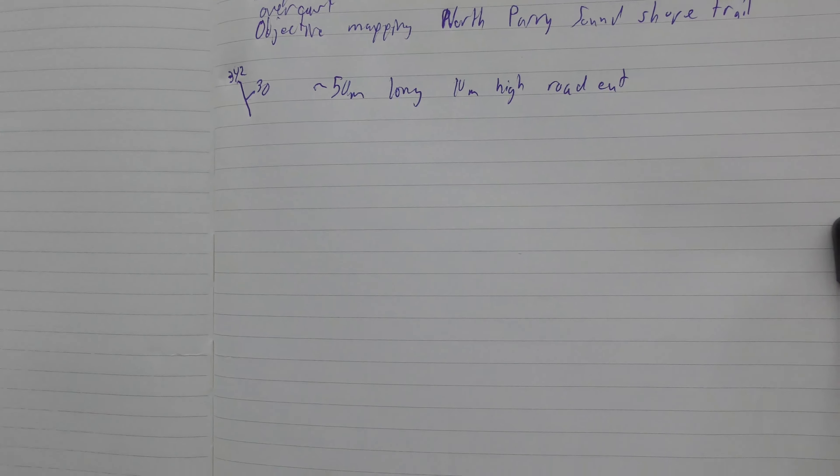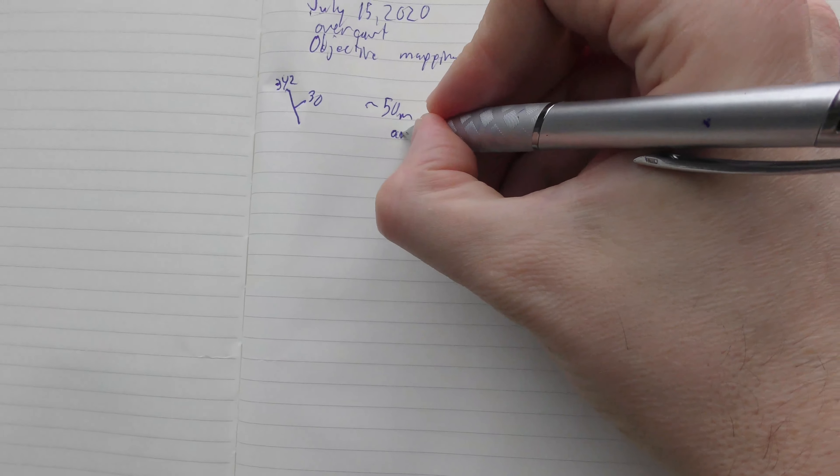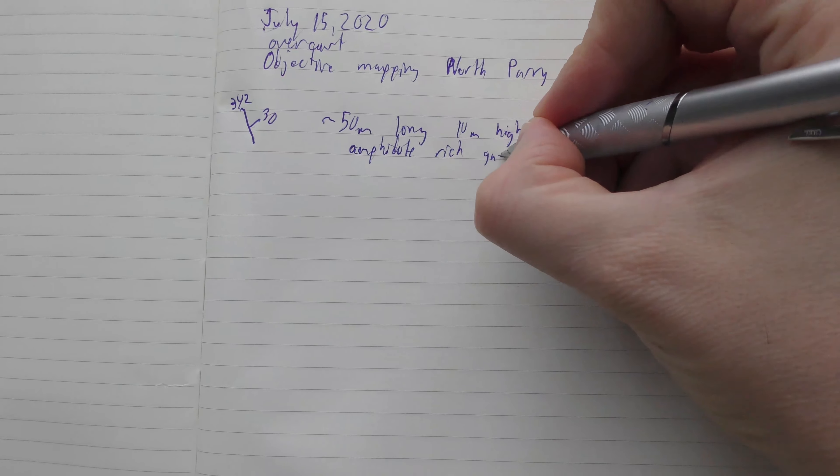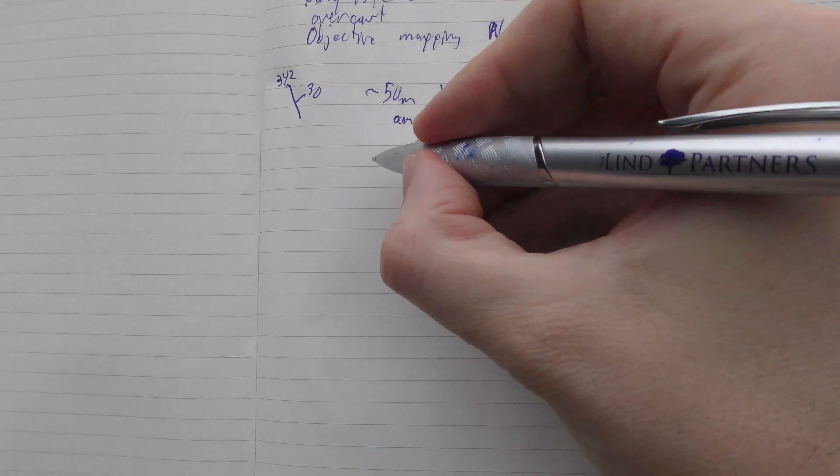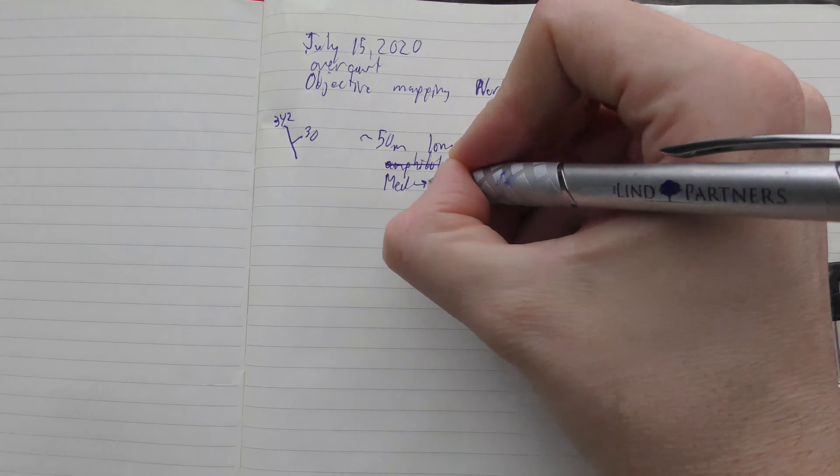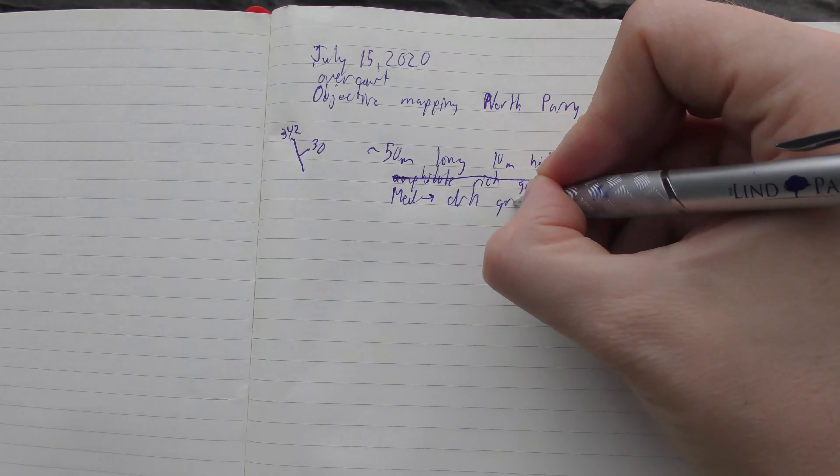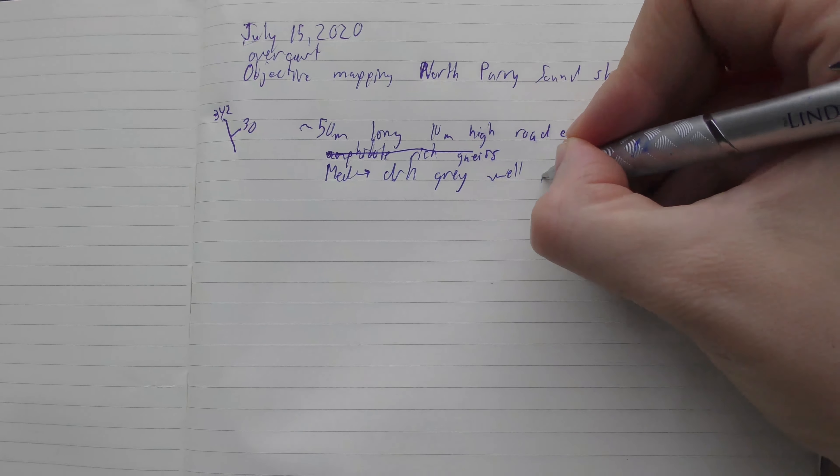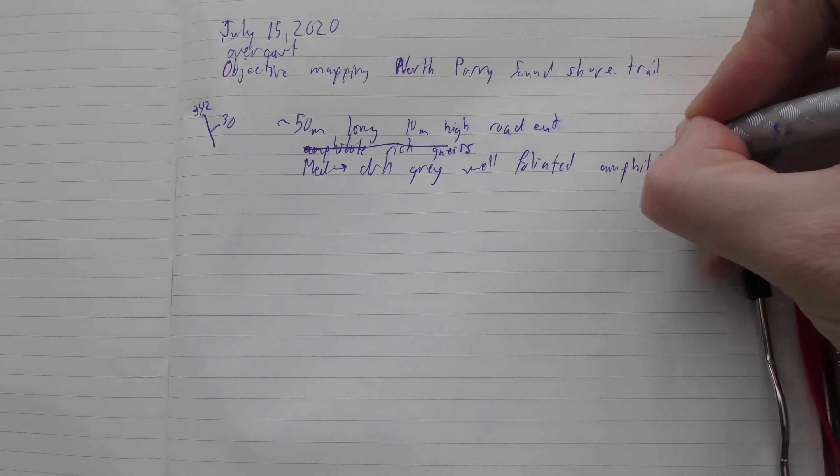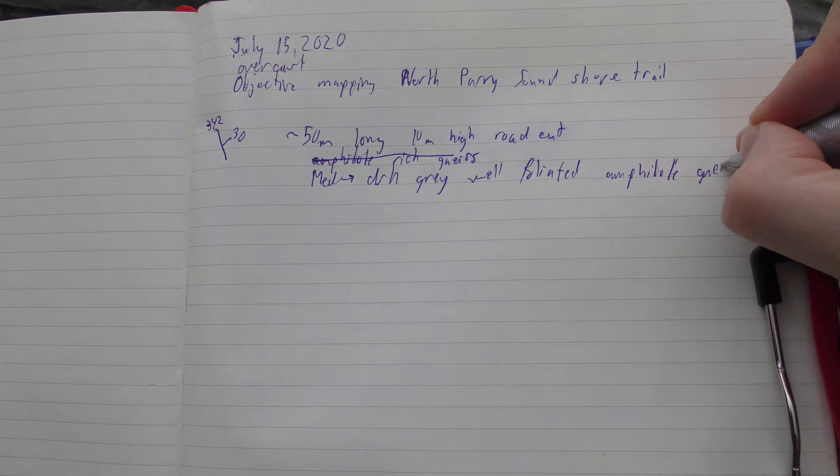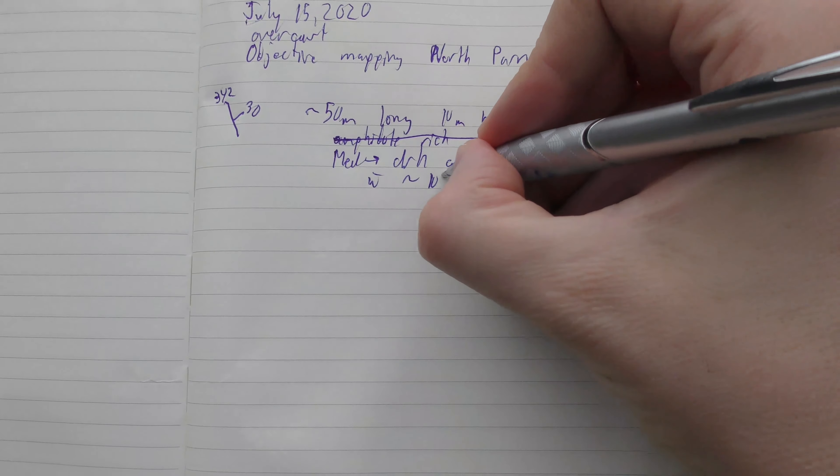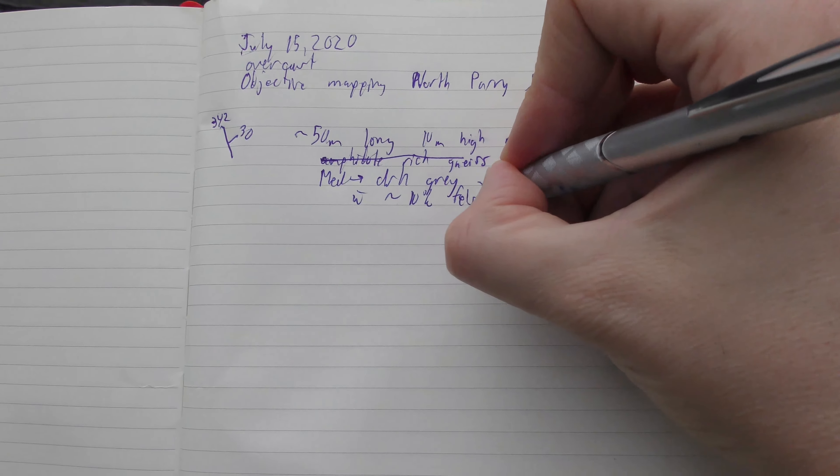It is an amphibolite, amphibol rich, nice... I actually should go through the full description. So let's just cross that out, it's actually a medium to dark gray, well foliated amphibolite with approximately 10% felsic layers.